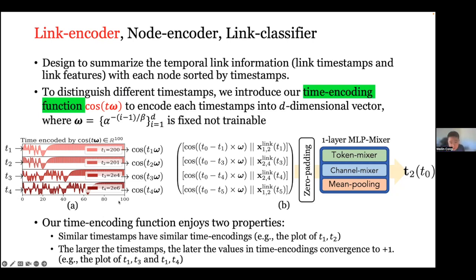The time encoding function has two important properties. First, similar time steps have similar time encodings — for example, T1 and T2, which are close to each other, have very similar encodings. Second, larger time steps cause the encoding curve to convert to one later; comparing T1 and T4, which is significantly larger, the curve moves to the right and converges to one much later. Existing work also uses a similar time encoding function, but with a trainable version where the weights and biases are learned during training.